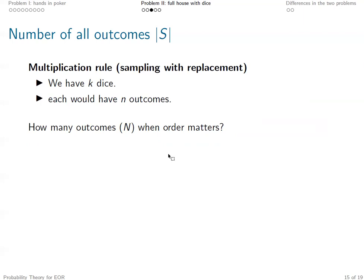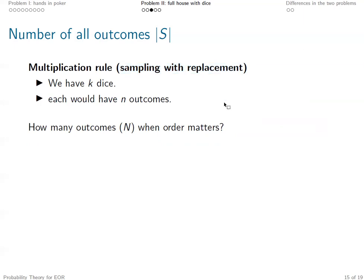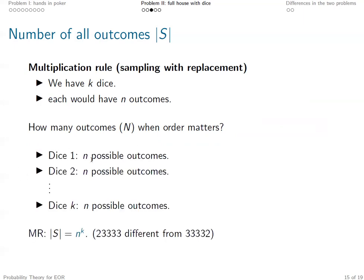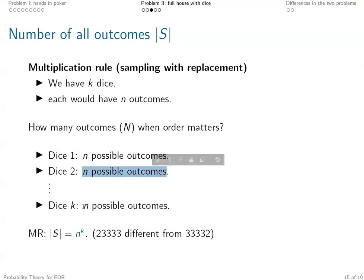Let's first calculate the number of outcomes in S. Different from problem one, this is now sampling with replacement. We have K dice, each with N different outcomes. For each die, we have the same N possible outcomes — here, choices from one to six. So it is sampling with replacement, and the number of outcomes does not change through the steps.